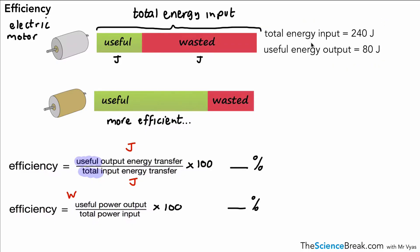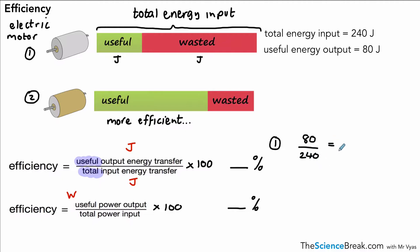Let's have a go at a couple of examples. For the first motor, we've got a total energy input of 240 joules and a useful energy output of 80 joules. So we do 80 divided by 240, which gives us 0.3 recurring as a decimal. If we want it as a percentage, we multiply by 100 to get 33.3 recurring percent.